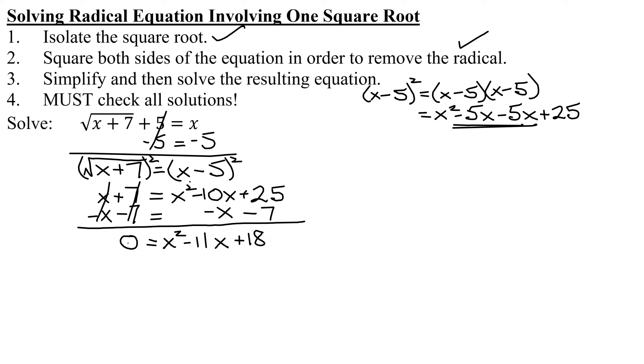So now I have everything on one side written in descending order, 0 on the other. So I'm ready to try and factor it. And if these factors come to you quickly, great. But I'm going to show you the systematic method of factoring. So remember, we compare it to ax squared plus bx plus c equals 0.